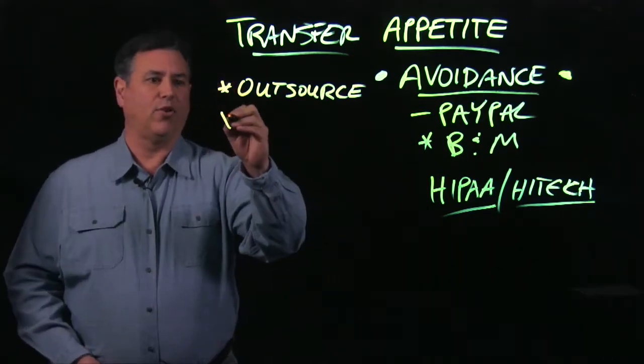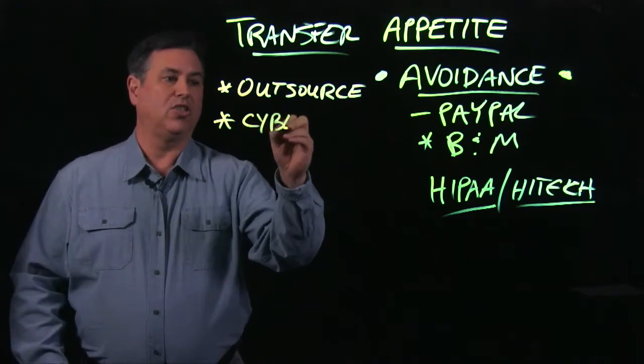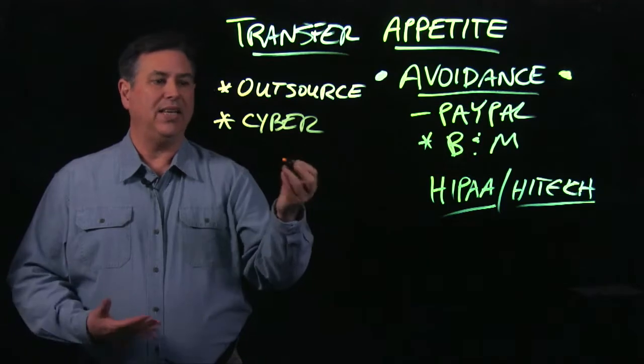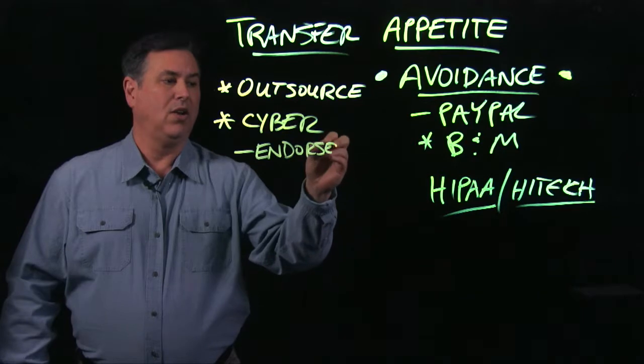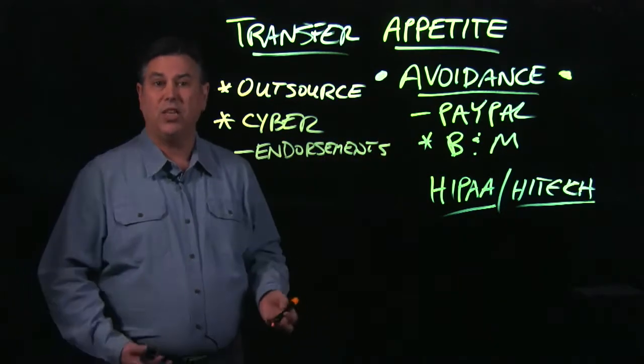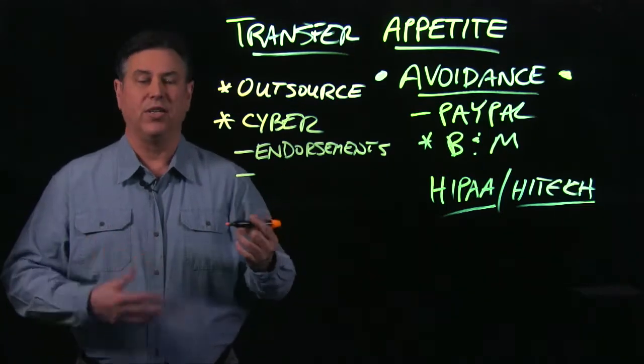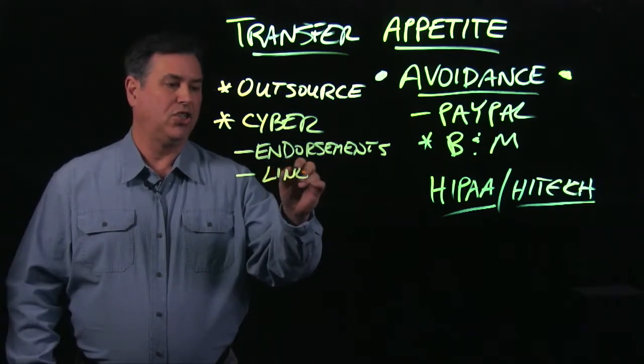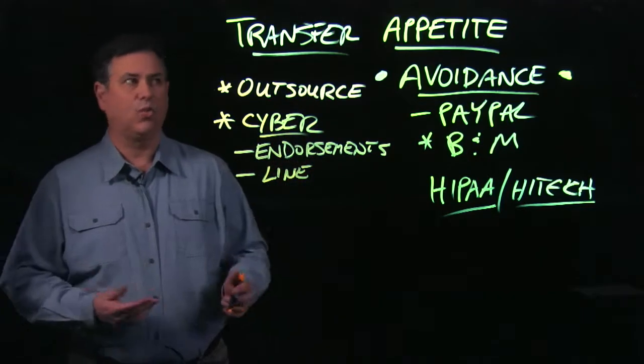Another way to transfer risk is through insurance. So specifically, cyber insurance. And that could be either getting a separate endorsement, usually it is a separate endorsement on your existing corporate liability policy. Or you could have an entire separate line of insurance for cyber insurance. So there's a couple of ways to handle risk, to deal with risk: avoiding risk and transferring risk.